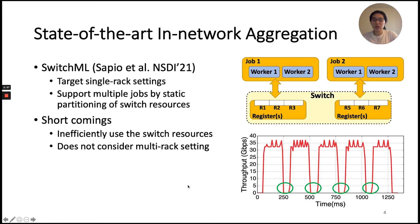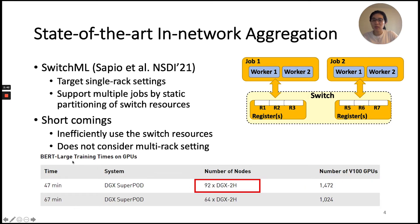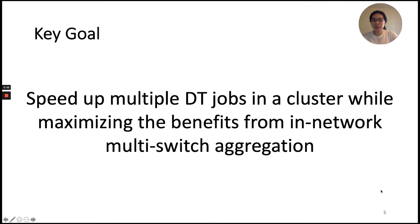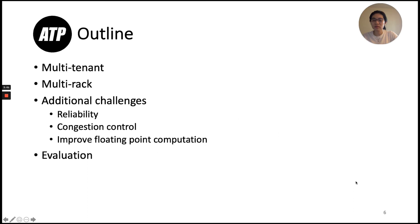Secondly, with ML models getting larger, a single job can span multiple racks. For example, BERT-large training requires multiple racks as 92 nodes cannot fit into one rack. The key goal of ATP is to speed up multiple distributed training jobs in a cluster while maximizing the benefits from in-network multi-switch aggregation. In this talk, I will mainly discuss ATP's design to support the multi-tenant scenario, then briefly discuss multi-rack support and the additional challenges.